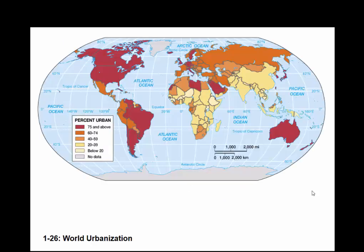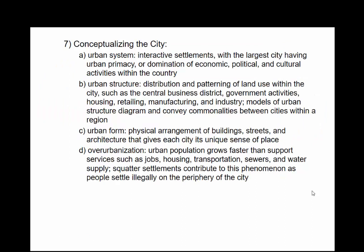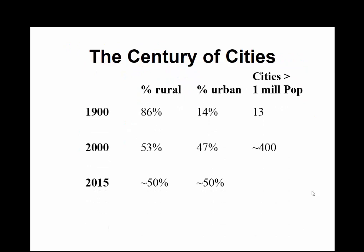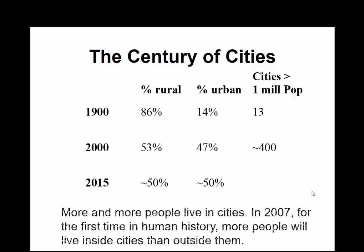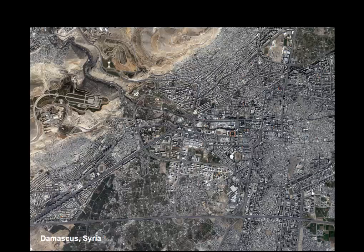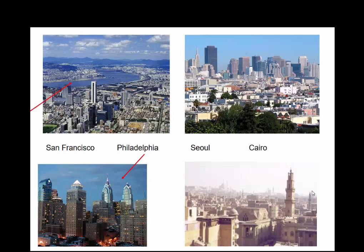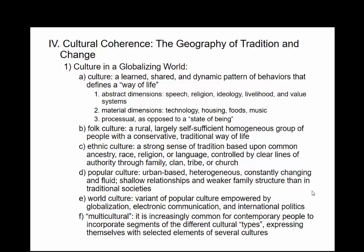This talks about urbanism. We can look at world urbanization and see where higher percentages of people are living in cities or urban areas. In the city we've got urban structure, urban form, and over-urbanization. Right now it's about 50-50 globally, while the United States is about 75% urban. There are lots of ways to measure or define 'urban.' You can see Damascus, Syria, as one example of a city that takes on the shape of the world around it.